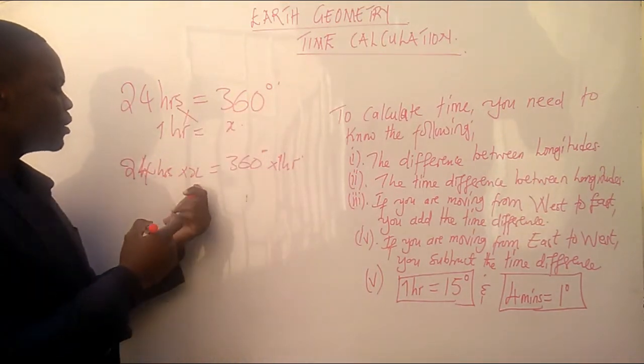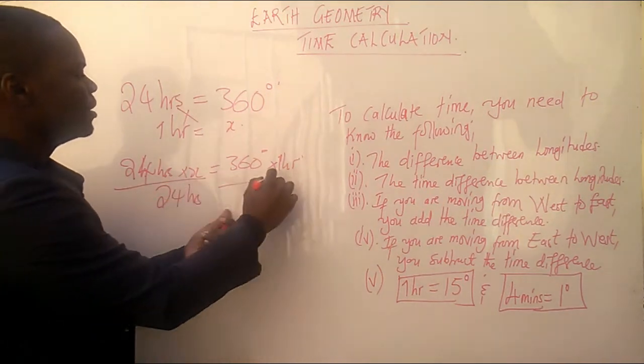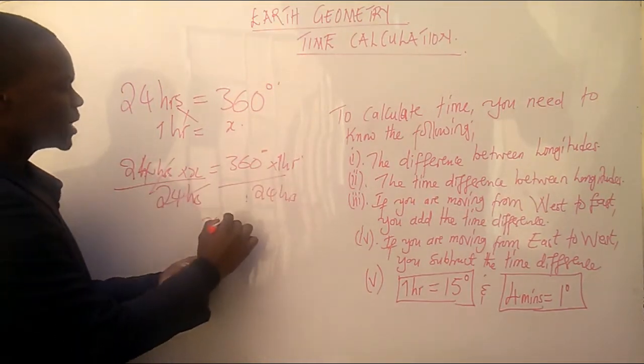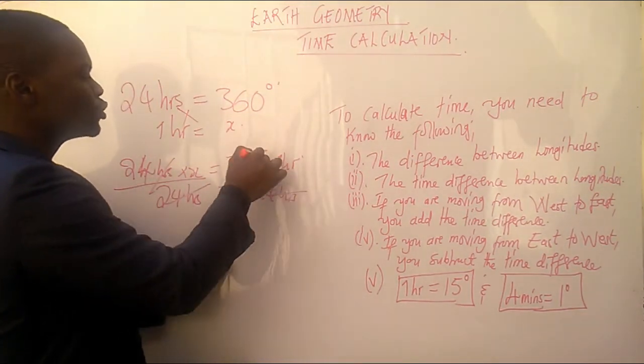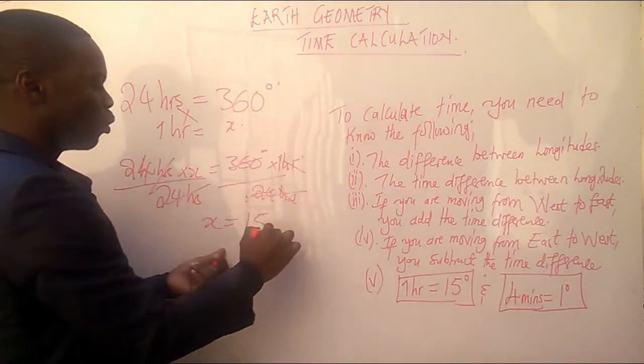Since we are interested in knowing the value of x, we divide both sides by 24 hours. Even this side by 24 hours. When you cancel this, you are going to have x is equal to 24 hours. Like 24 into 360 degrees is 15.